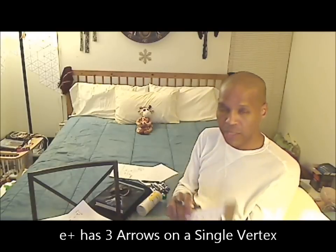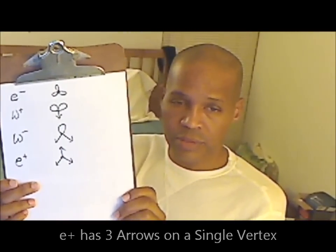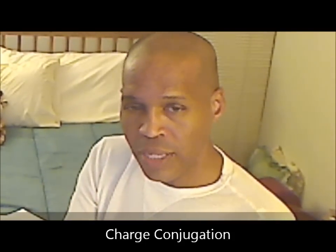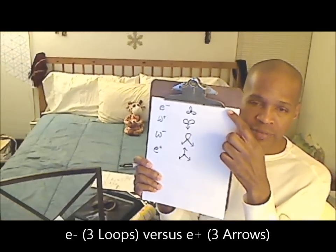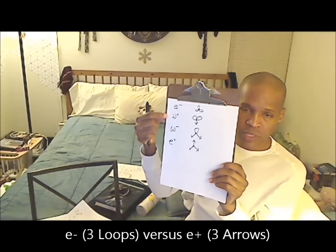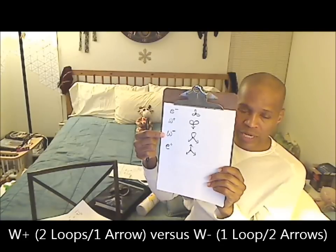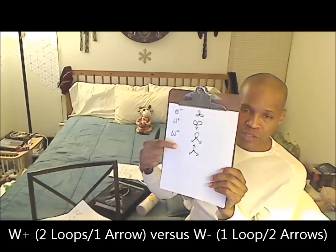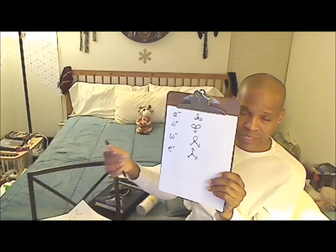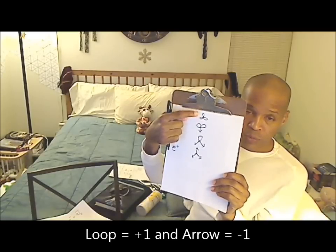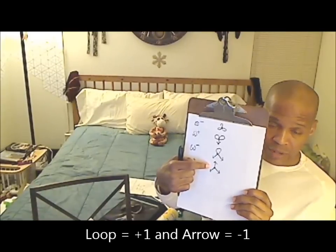The positron, the anti-electron, has all arrows. When one switches a loop for an arrow, one is doing what we call charge conjugation in particle physics — taking a particle and making it its antiparticle. Where the electron has three loops, its antiparticle has three arrows. Where the W plus has two loops and an arrow, the W minus has one loop and an arrow. If you add together the loops and arrows for the electron and positron, plus three cancels minus three, which is how charge conjugation identifies particle versus antiparticle.